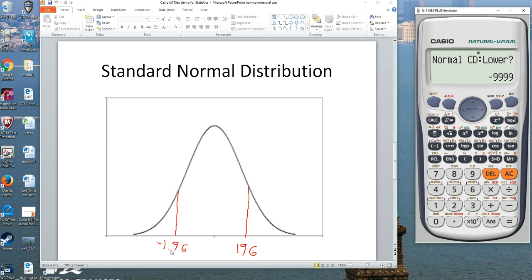Your lower limit this time is negative 1.96. Your upper limit is 1.96. Your standard deviation is still 1, your mean is still zero.